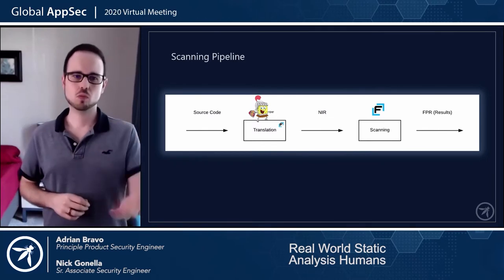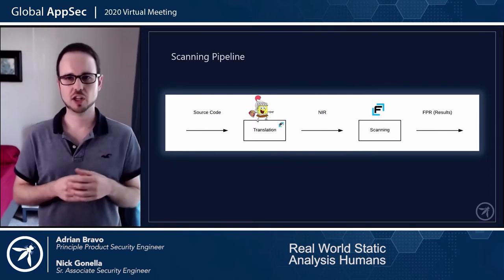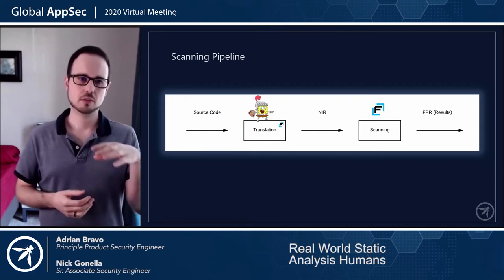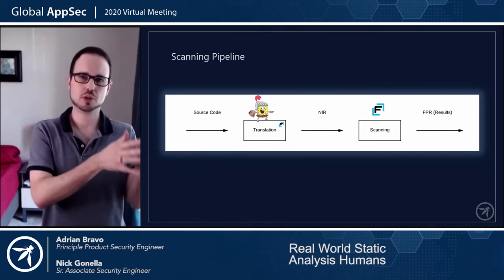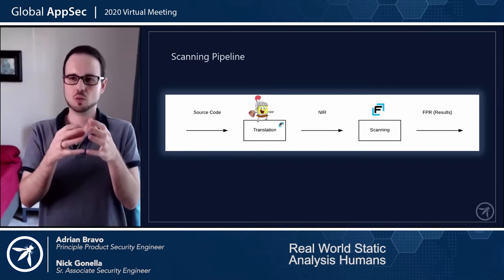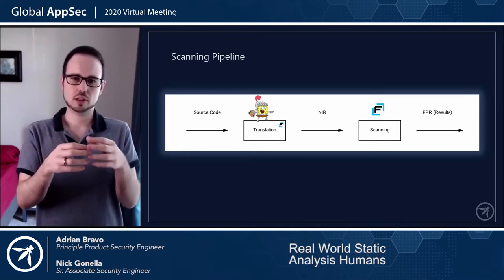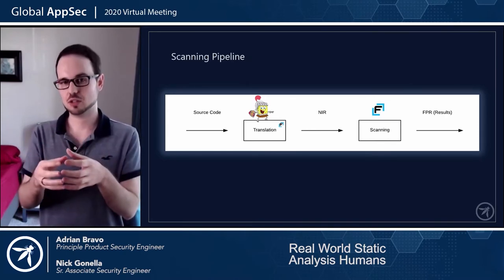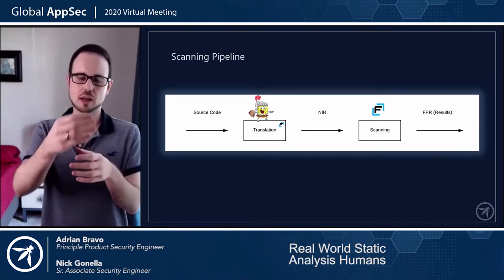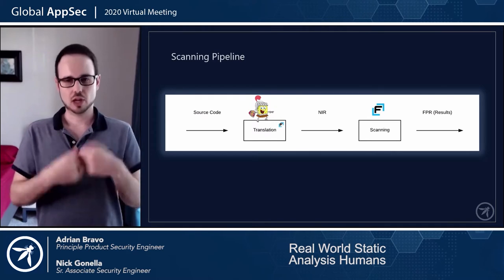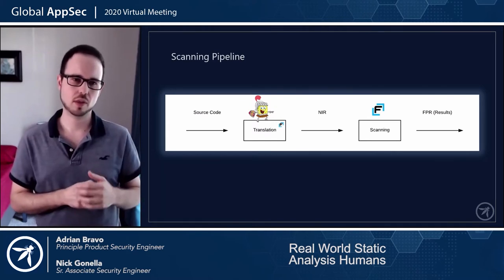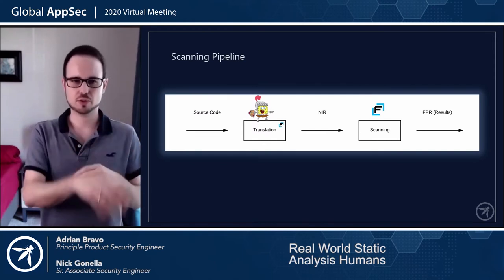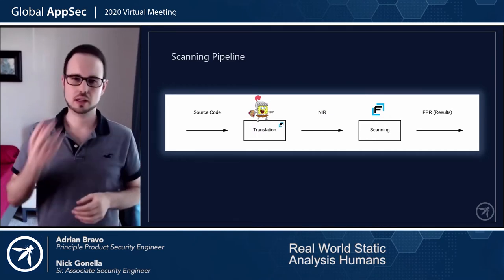At a high level, a scanning pipeline looks like this: you have source code, it goes through a translation phase where the original language — Java, Python, or whatever — is translated into an intermediate representation the scanner uses to analyze for vulnerabilities. With our vendor, a binary called Source Analyzer performs both stages. You run it twice with different flags — once for translation, then pass the translation to the scanner — and you get your results.